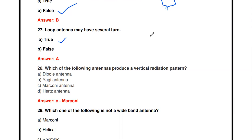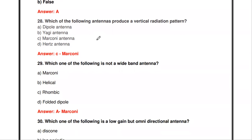The loop antenna may have several turns — true. Loop antennas can be single-turn or multi-turn, so the statement is true.